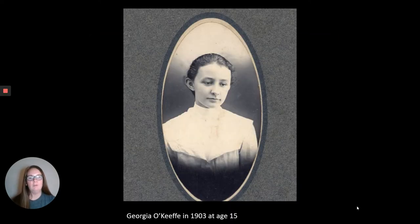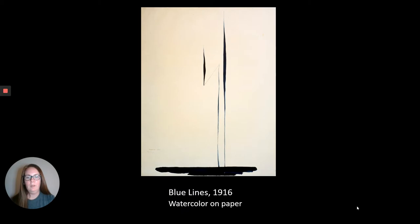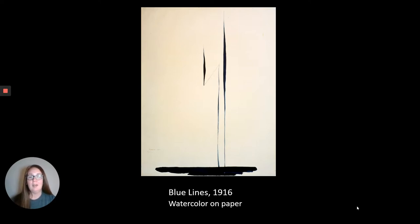Here we have a photograph of Georgia O'Keeffe at the age of 15 — a photo that would have appeared in her high school yearbook. And this is an early watercolor that she did, done in 1916, called Blue Lines. In 1916, many people were still creating artworks that were very recognizable and realistic, but this is an abstract art.